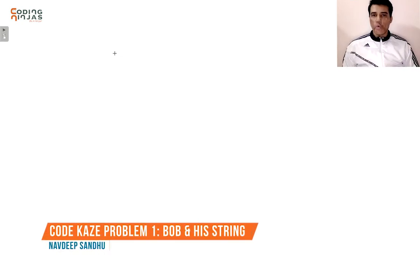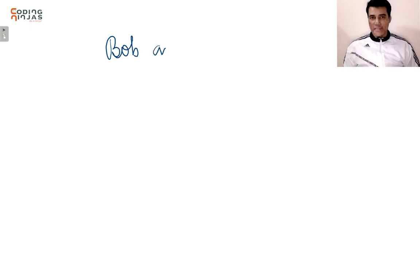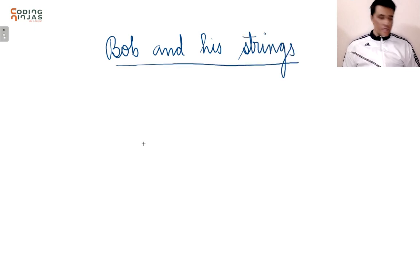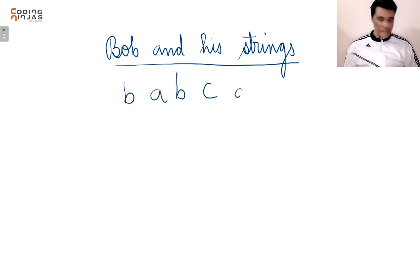Let's discuss the first question of Code Kaze round 2. The question was 'Bob and his Strings'. Let's take a sample test case and try to find how we'll answer that question. The sample test case given to us was B A B C D and D C.